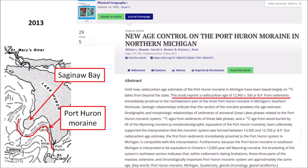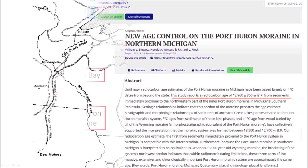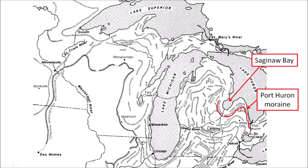William Blewett and two co-authors published a paper in 2013 titled 'New Age Control on the Port Huron Moraine in Northern Michigan.' This paper is more recent than the references used by Schetzel to claim that Saginaw Bay was not covered by ice 12,900 years ago, and reaches the opposite conclusion. The abstract reports a radiocarbon age of 12,960 plus or minus 350 years before the present from sediment immediately proximal to the northwestern part of the inner Port Huron Moraine in Michigan's southern peninsula. In this image, we can see that the Port Huron Moraine curves around Saginaw Bay, indicating that a glacier covered Saginaw Bay 12,960 years before the present as determined by Blewett.